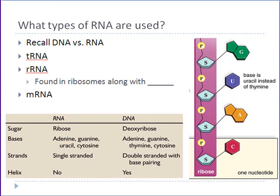Before we go into the specifics of how exactly we take DNA and make messenger RNA, and then take messenger RNA and make a protein, I want to talk briefly about the different types of RNA we're going to be discussing during our overview of the central dogma. There are different types of RNA.